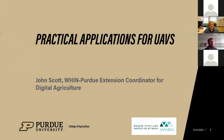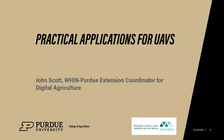Thank you, Bruce. So — unmanned aerial vehicles: UAV, UAS, SUAS, or drones. I'm going to use all these terms interchangeably. The federal government calls it an SUAS — small unmanned aerial system — which is what the FAA uses in all their publications. But in industry, the biggest term by far when talking to producers is drone.